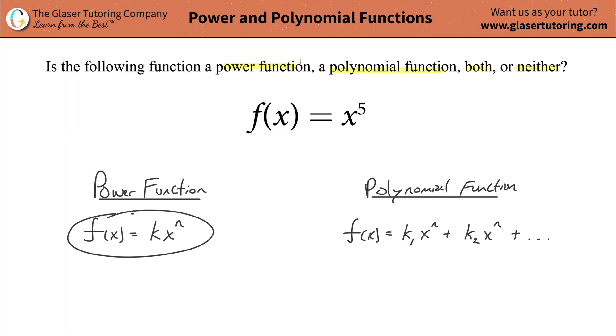talk about a power function relatively quickly. It says that the function should equal some constant—when we hear constant we think numbers—some number multiplied by a variable raised to some number or some other constant.